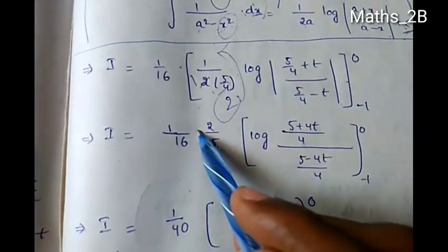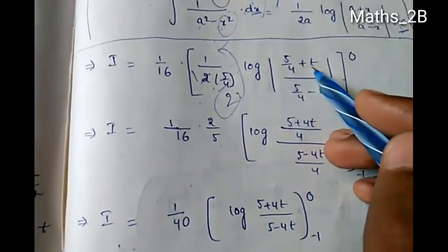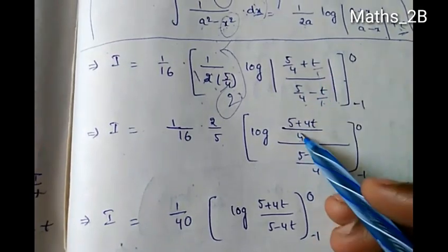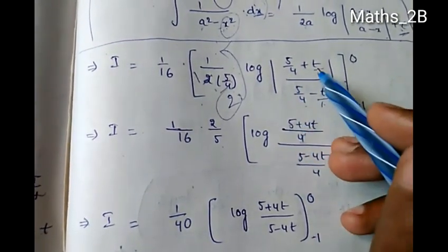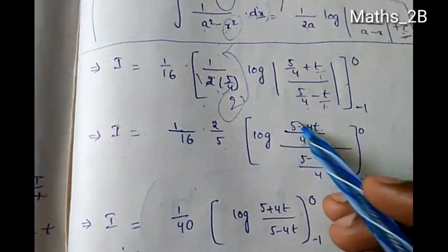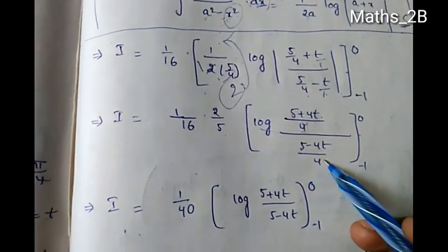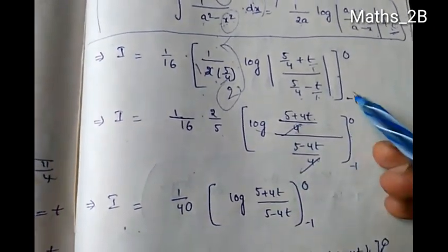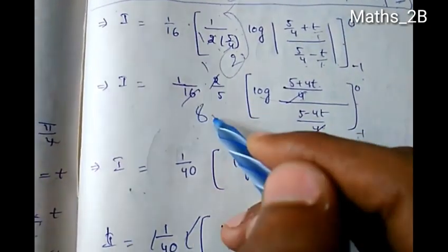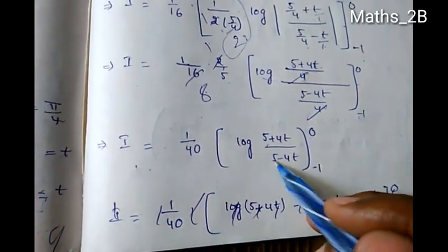Now applying the limits. At t = 0: log|(5 + 0)/(5 - 0)| = log|5/5| = log 1 = 0. At t = -1: log|(5 + 4·(-1))/(5 - 4·(-1))| = log|(5 - 4)/(5 + 4)| = log(1/9).